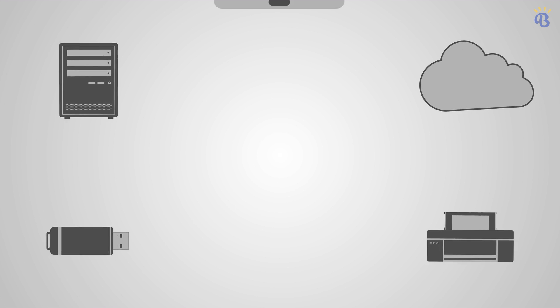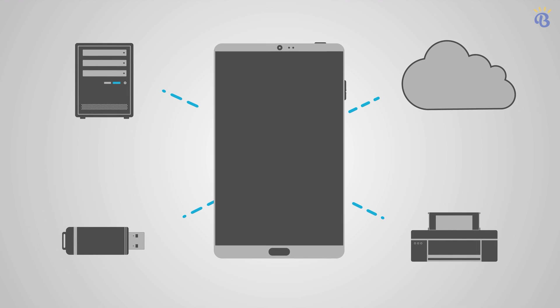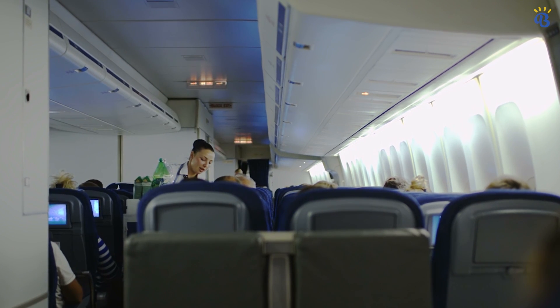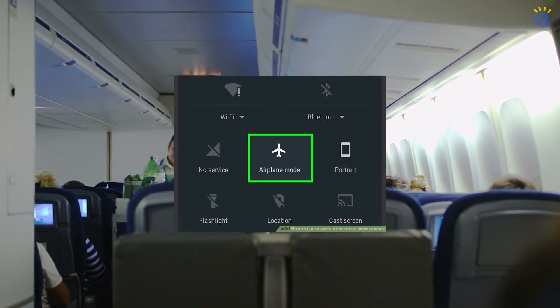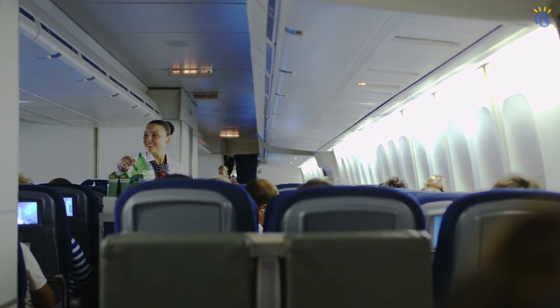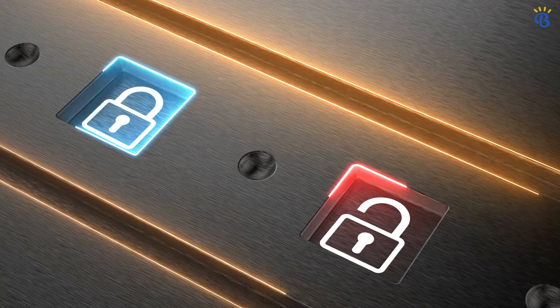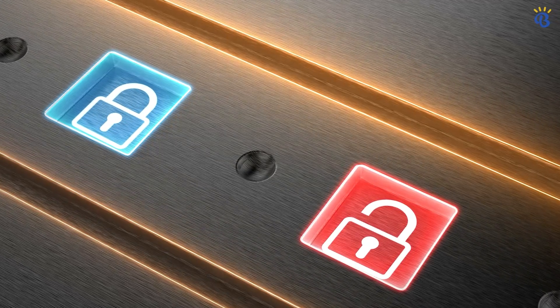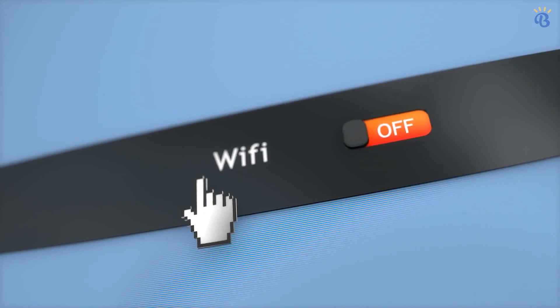Now let's start with the biggest question: what is airplane mode? It's a mode that turns off the wireless functions of your smartphone or tablet. When you turn this setting on, usually by finding the plane icon and tapping it, airplane mode turns off the cellular voice and data connection on your phone. Often, it also disables Wi-Fi and Bluetooth.